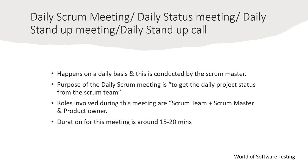Roles involved are the scrum team, scrum master, and product owner. Frequency is daily, and duration is around 15 to 20 minutes — maximum 30 minutes. The scrum master chairs this meeting. Based on the daily stand-up status, the scrum master can prepare burn down and burn up charts, which show how much work is completed versus planned versus pending.